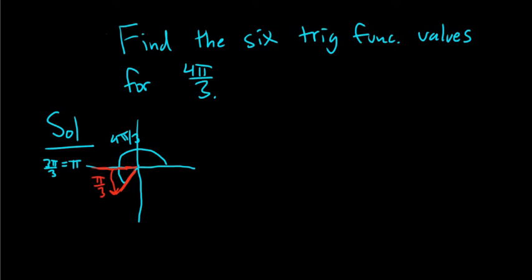What we do is first find the trig function values for π over 3, and then using the fact that we're in quadrant 3, we can determine the correct signs. To find the trig function values for π over 3, there are a couple of ways to do it. I have them memorized, so I'm just going to go with it.